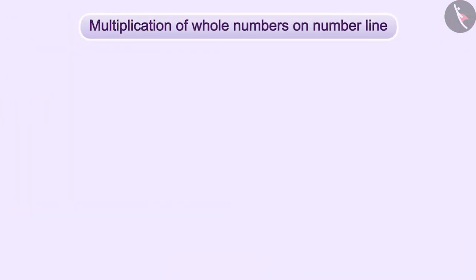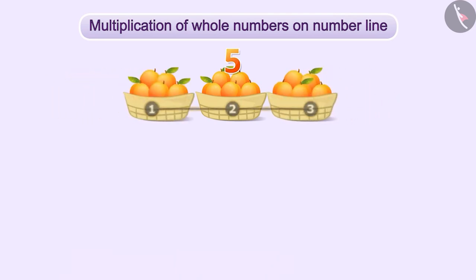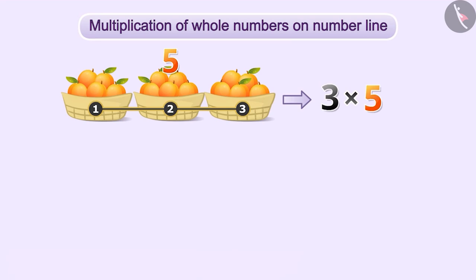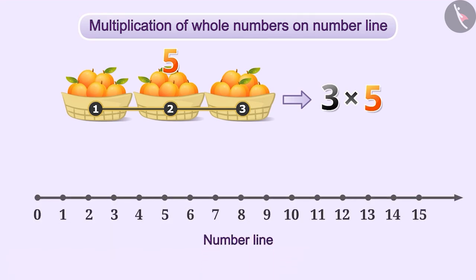Now let us learn how multiplication of whole numbers is represented on the number line. Look at this basket. There are five fruits in it. If two more baskets containing the same number of fruits are kept with it, then how many fruits are there altogether? To find the value of this, we need to find three times five. Let's express it on the number line. Like addition or subtraction, we will not start from five. Instead, we will start from zero.